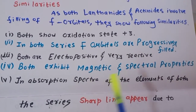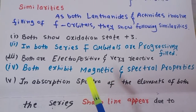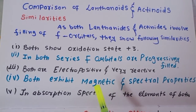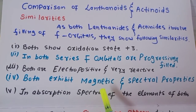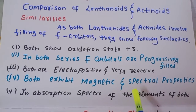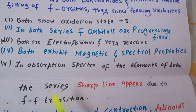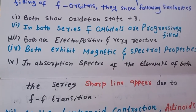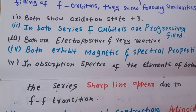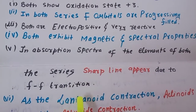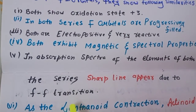Fourth point: both exhibit magnetic and spectral properties. Because they have unpaired electrons, they show magnetic behavior and characteristic spectra. Just as d-block elements show d–d transitions, the absorption spectra of lanthanides and actinides arise from f–f transitions, producing sharp spectral lines.